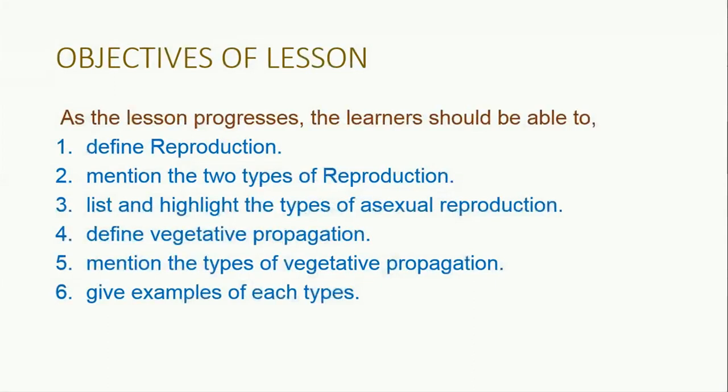Hi, my name is Gloria Robert. Today we are discussing the topic: Asexual Reproduction. The objectives of the lesson are: one, define reproduction; two, mention the two types of reproduction; three, list and describe the types of asexual reproduction; four, define vegetative propagation; five, mention the types of vegetative propagation and give examples of each type.